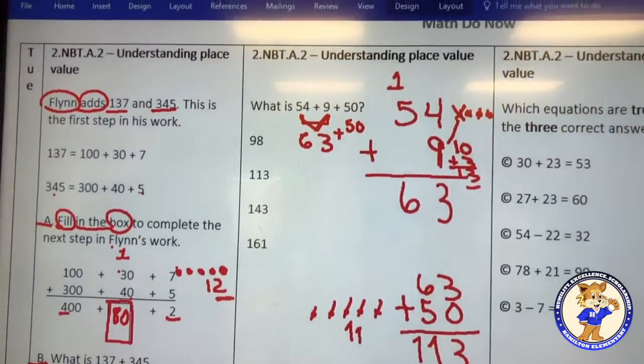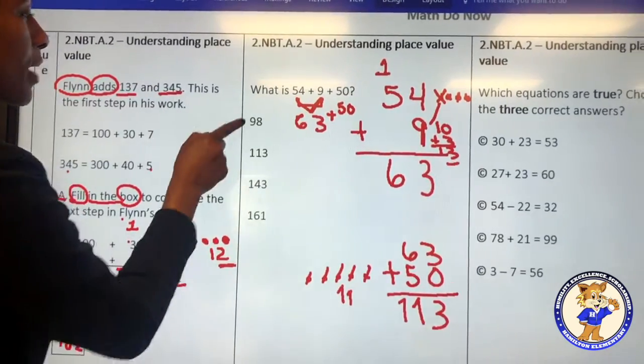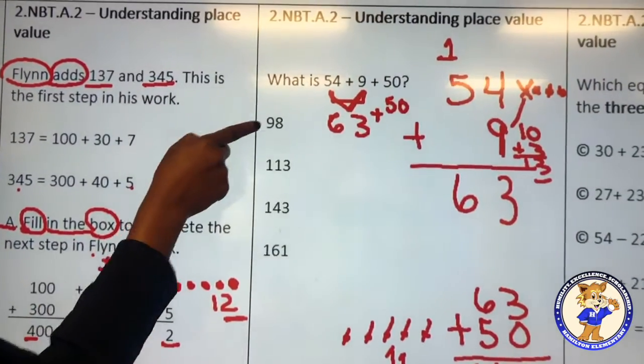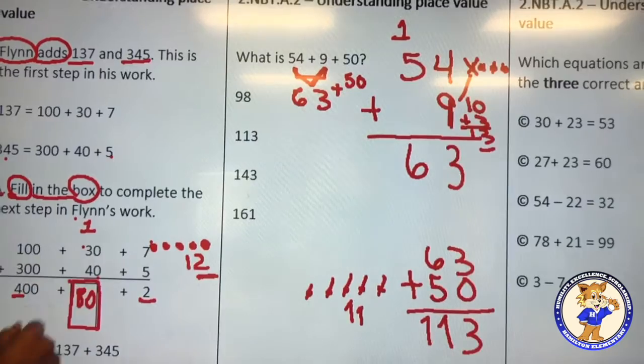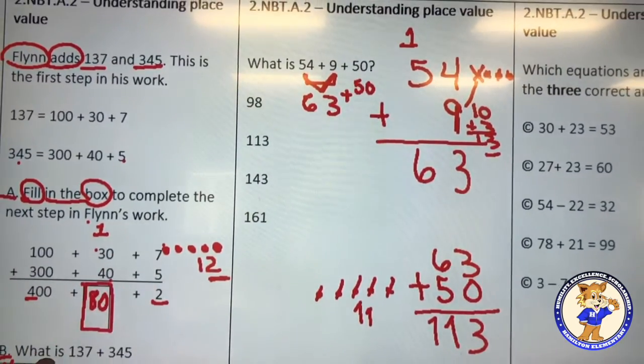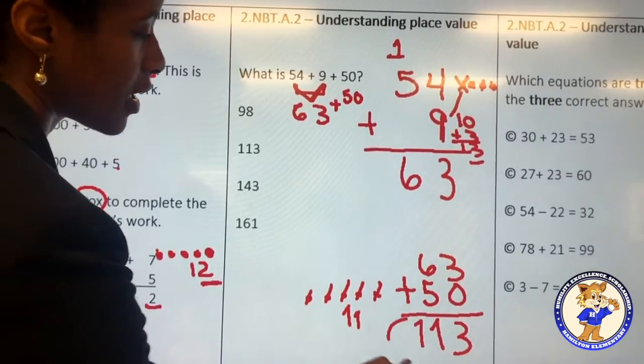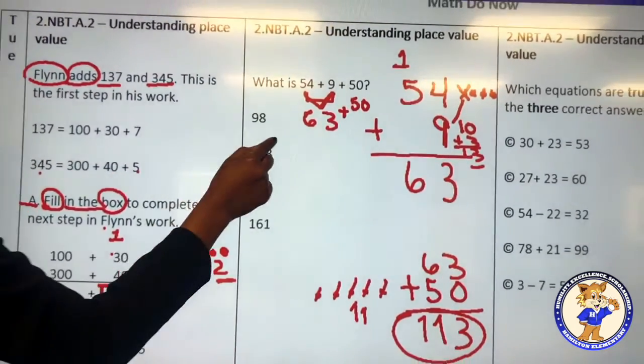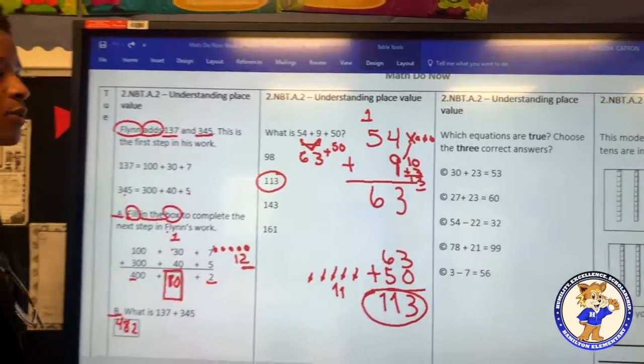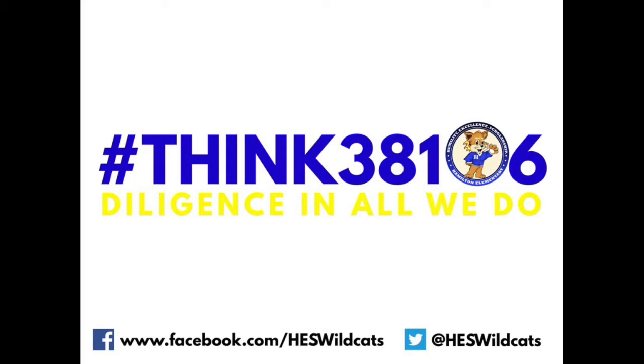So, the answer to our problem, I'm going to look at my choices. My choices are 98, 113, 143, 161. I can easily see that my answer matches one of the answer choices and that's the one I will select. Thank you very much.